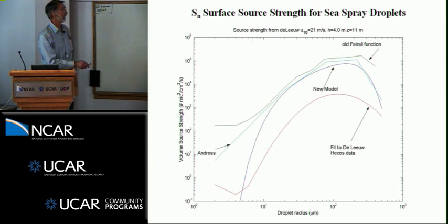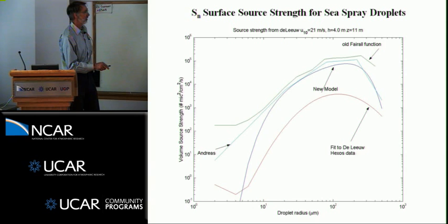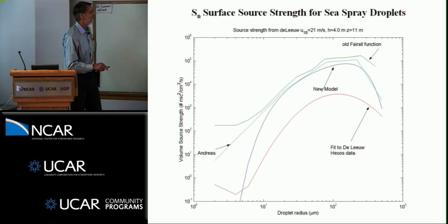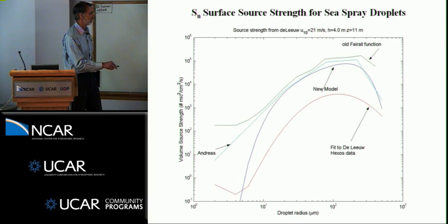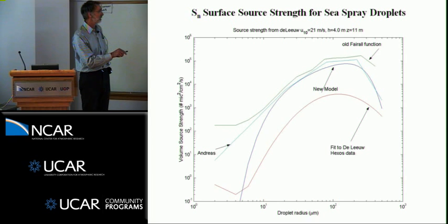This is an example of these sea spray source functions — a couple of functions, one of mine and one from Ed Andreas, shown at a wind speed of about 21 meters per second. There's also this 'new model' which has been tuned to fit that, and it's actually an estimate from one field program. Within this model we have a tunable amplitude function that we ramp up and down.